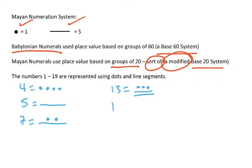The largest number that you represent with only lines and dots would be 19. So you'd need to get to 15, so I'd put 3 line segments to represent 15 and then 4 dots to get me up to 19. And that's how you would represent 19 in the Mayan system.